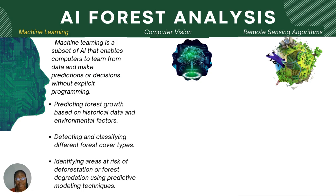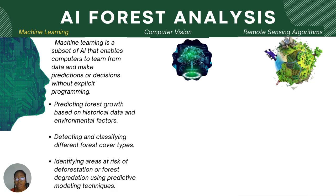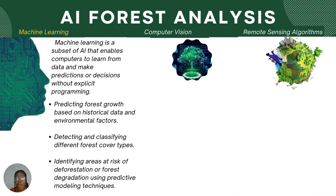Machine learning is a subset of AI that enables computers to learn from data and make predictions or decisions without explicit programming. For example, applying machine learning to analyze historic forest growth data involves processes like data collection — getting measurements of tree heights, DBH, and canopy cover — then preprocessing your data, which means cleaning it to remove outliers, check for missing values, and normalize numerical features. The next process is feature engineering, which is extracting relevant features such as growth rates, growth patterns, and environmental variables.